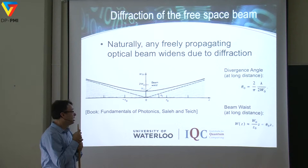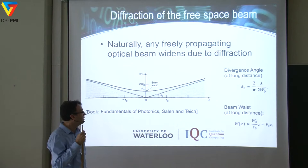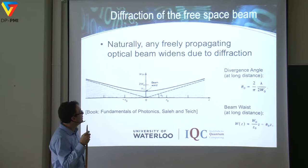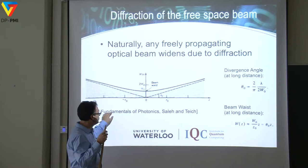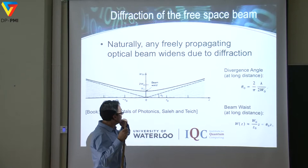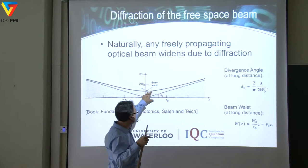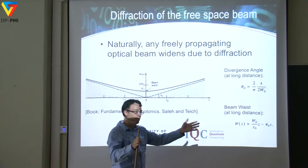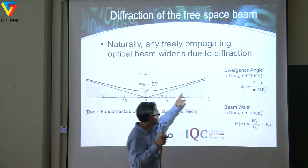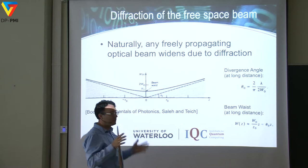For free space propagation, a key effect is diffraction. Even a beam prepared in the lab will always have a natural divergence — there's no way around that. For Gaussian optics, a beam is characterized by a certain beam waist — the narrowest section — and from there it diffracts. Significantly far from the beam waist, it diverges essentially like a linear cone with a certain divergence angle, which is the ratio of wavelength to beam diameter at the center.